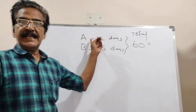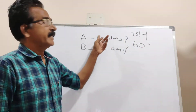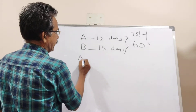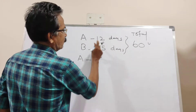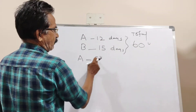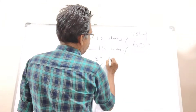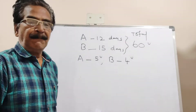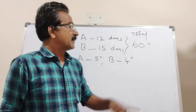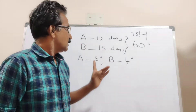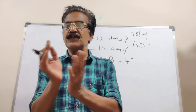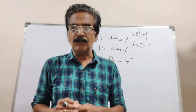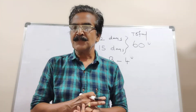A can complete 60 units in 12 days, which means A does 5 units of work per day — that is 60 divided by 12, which is 5 units. B per day completes 4 units of work — that is 60 divided by 15. So A can do 5 units per day and B can do 4 units per day.